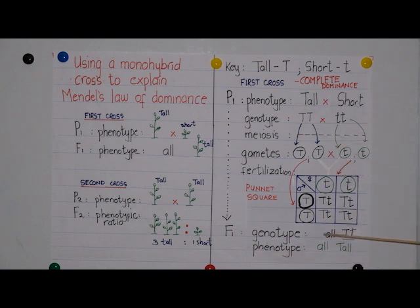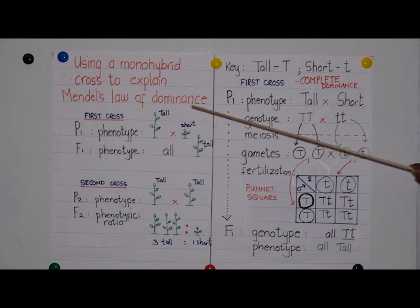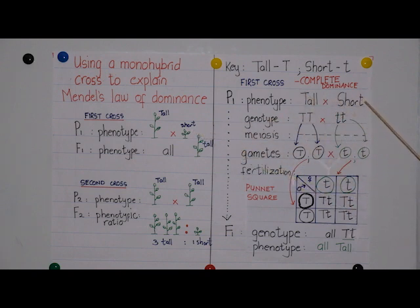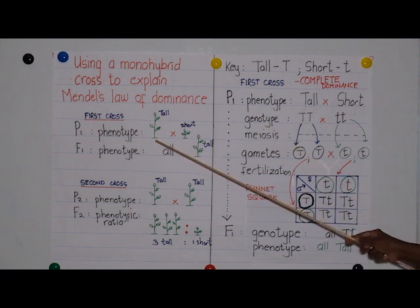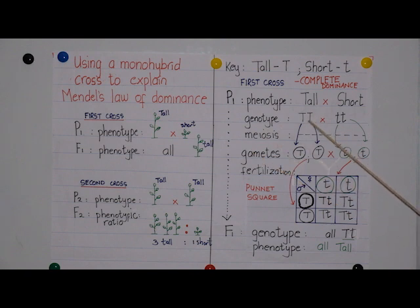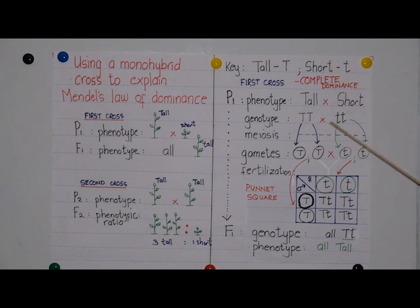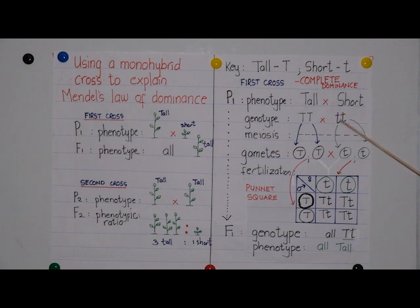Now let's do this cross to see why Mendel got all tall plants in his F1 when he crossed a homozygous tall plant with a homozygous short plant. P1 phenotype: the first plant's physical outward appearance was tall and the second parent was short, so it's tall times short. For the genotype, the tall plant had two dominant alleles for tallness. We write a key: capital letter T indicates the allele for the tall plant and small letter t the allele for the short plant. The genotype for the homozygous tall plant is TT. Since short height is a recessive characteristic, the short plant had two small letter t alleles — tt.